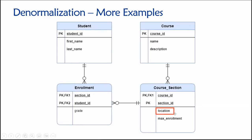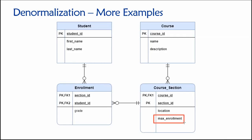We can store additional non-key information in this table, like the location of the class — maybe it's online on Zoom, maybe it's in a classroom. And then maybe we have a maximum enrollment: the maximum number of students allowed to enroll in the class. When you're enrolling in classes each semester, each class has a maximum enrollment. We can't let 718 people take this database class — it just wouldn't be feasible. So we set an upper limit on enrollment, and when classes are full, it means the total number of students has met that limit.